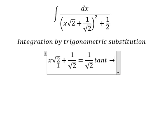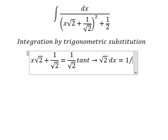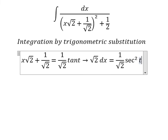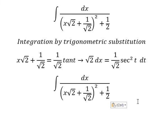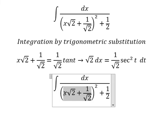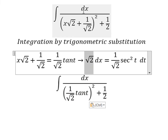Now we need to differentiate both sides. We have the square root of two times dx equals one over the square root of two times sec²(t) dt. Since we don't have the square root of two on this side, I will put this one to the right.